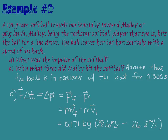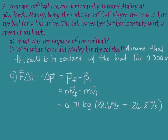There's one mistake we need to address — we forgot to account for direction. When that ball is traveling toward Mailey, it's going in the opposite direction compared to when it travels away from her. So I need to make sure these two velocities have different signs to indicate they're in opposite directions. I'll make the 26.8 negative. So when we have minus a negative, that ends up being plus a positive — those two signs cancel each other out. Doing the multiplication, I find that the impulse delivered to the ball is equal to 9.48 kilograms·meters per second. You could also use units of Newton·seconds for impulse.